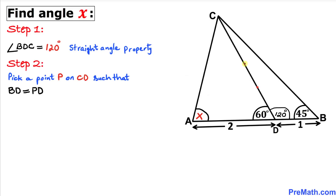Next, let's pick a point P on line segment CD such that line segment BD and line segment PD are equal. Since line segment BD is one unit, line segment PD is going to be one unit as well.